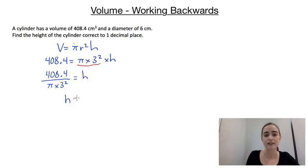And then we can pop that in our calculator. So we'll end up with h equals, and if we round it off to one decimal place, it's going to be 14.4 centimeters. So our cylinder has a height of 14.4.